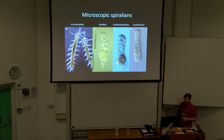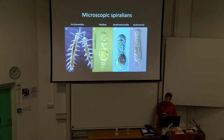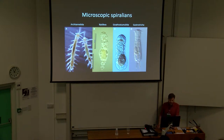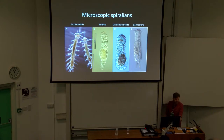This is just a look at what some microscopic spiralians look like. They're often transparent, tiny, kind of obscure, a bit esoteric. The examples I'm showing here are archiannelids, which we now know are secondarily reduced polychaetes — they've become secondarily miniaturized from a macroscopic ancestor. We also have things like rotifers or gnathostomulids, which are both types of jaw worms. But I'm going to be focusing on gastrotricha.